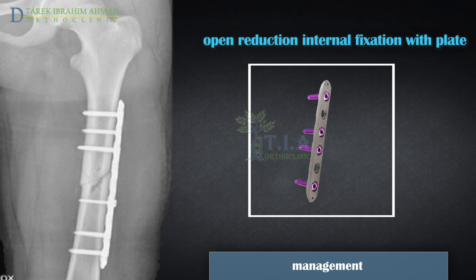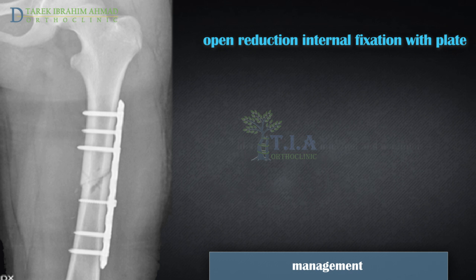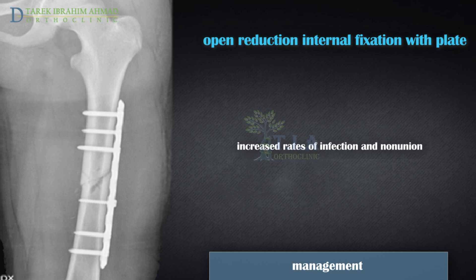Plates and screws are often used when intramedullary nailing may not be possible. During this operation, the bone fragments are first repositioned into their normal alignment and held together with screws and metal plates attached to the outer surface of the bone. This method is inferior when compared to intramedullary nailing due to increased rates of infection and nonunion.